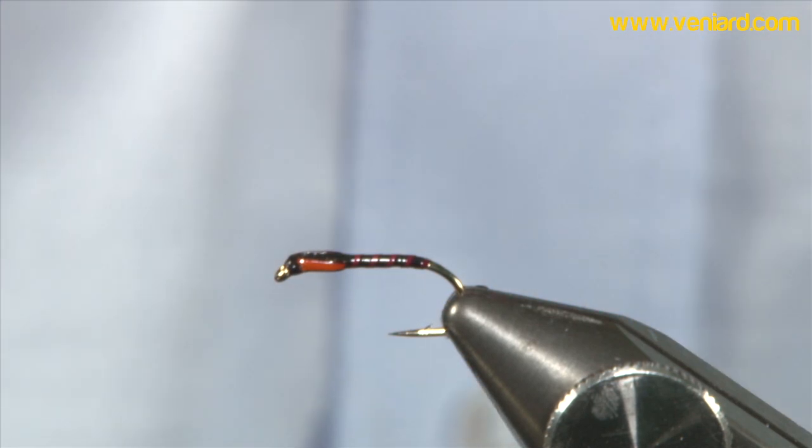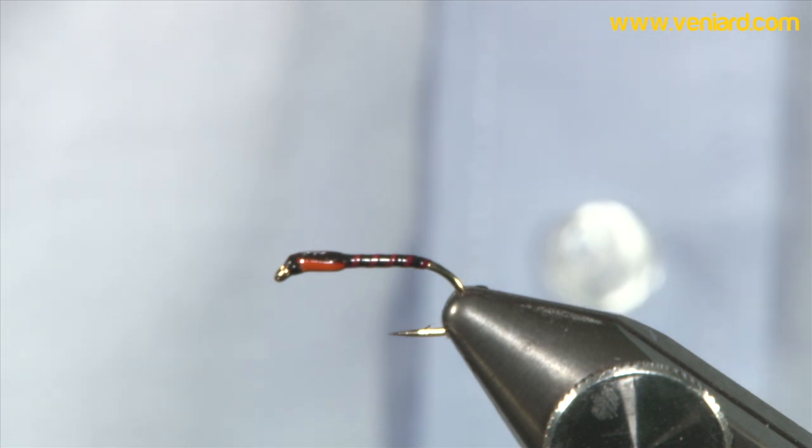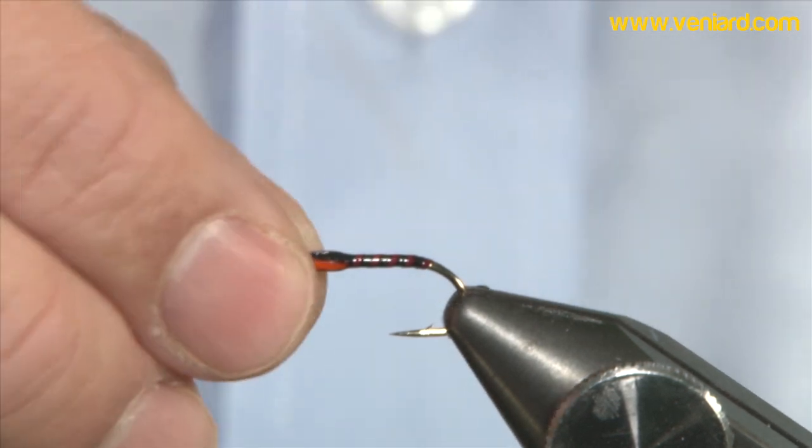Love this stripped herald stuff for vineyards, it's a claret dyed herald stripped back obviously. Nice trigger points, the jungle coat cheeks, a great buzzer the year round, whether you're fishing still water, small or large reservoirs. Let's go ahead and tie them.